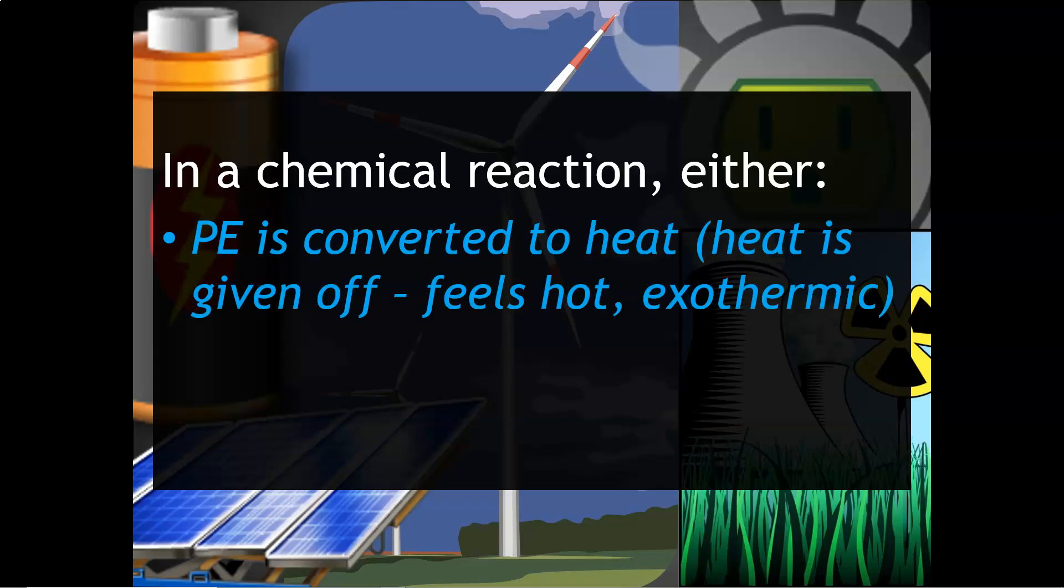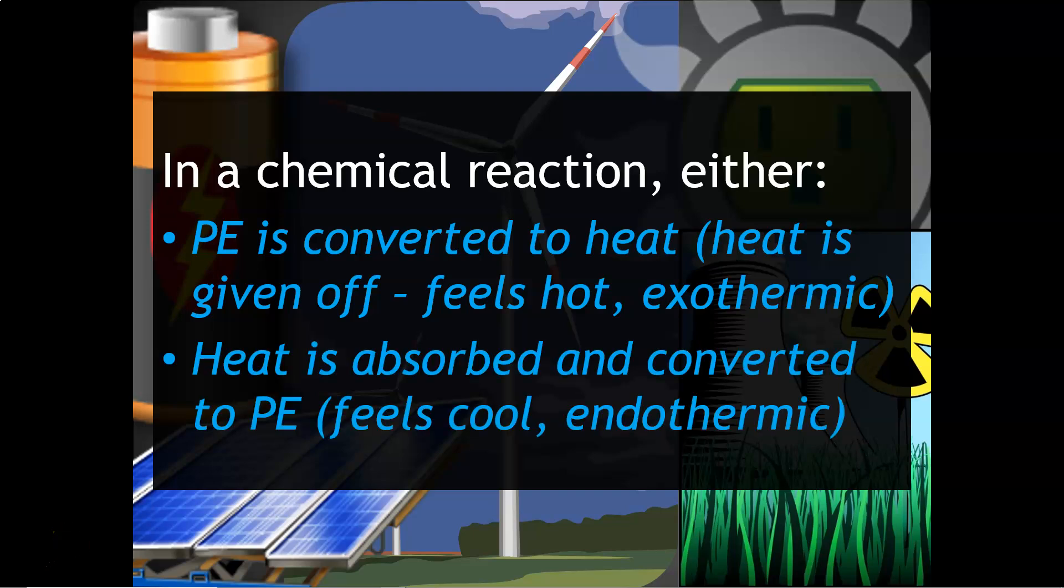In a chemical reaction, you'll see one of two things. First is that your PE or potential energy is converted to heat. For example, heat is given off and the reaction or phase change feels hot and it's exothermic. Heat is absorbed and then converted to PE, and that's where you would see that your reaction, for example, would feel cool and that is endothermic.